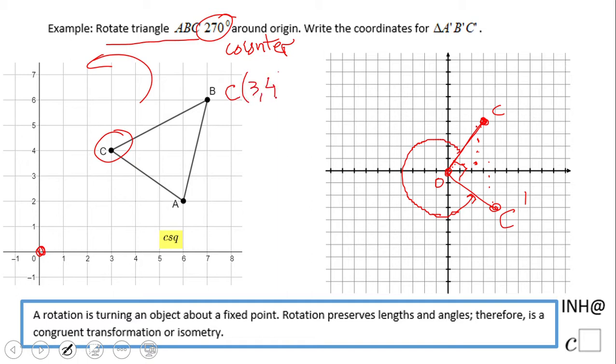(x, y) becomes what? We notice that the y-coordinate, the 4, goes first. We see it right here. So we're going to have y, and the x goes second and also switches